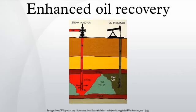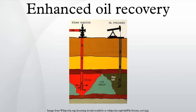Thermal methods use various approaches to heat the crude oil in the formation to reduce its viscosity and/or vaporize part of the oil, thus decreasing the mobility ratio. The increased heat reduces the surface tension and increases the permeability of the oil. The heated oil may also vaporize and then condense, forming improved oil. Methods include cyclic steam injection, steam flooding, and combustion. Steam injection has been used commercially since the 1960s in California fields. In 2011, solar thermal enhanced oil recovery projects were started in California and Oman, using a solar array to produce the steam.